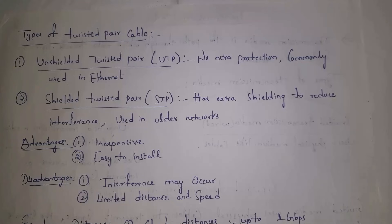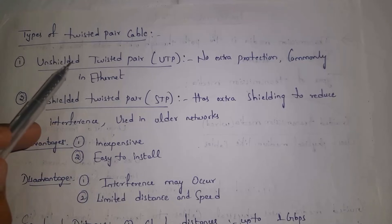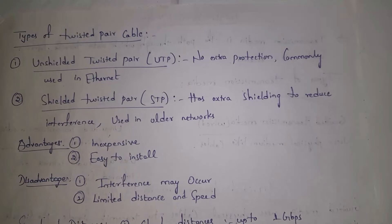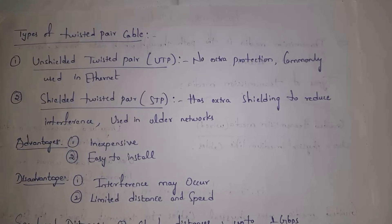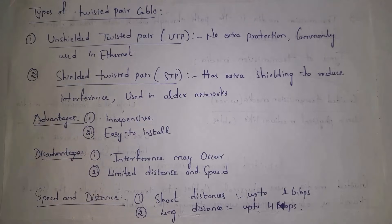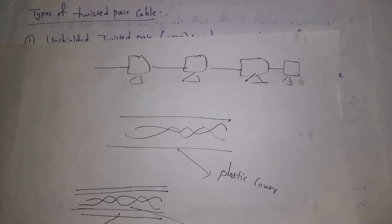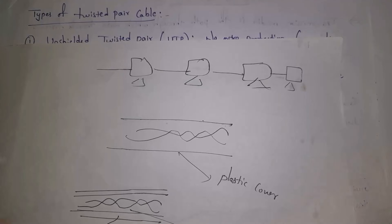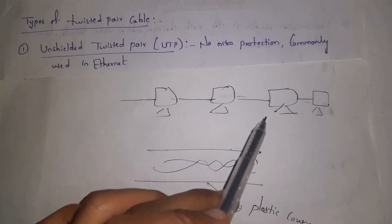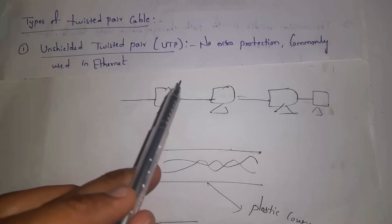Twisted pair cables are classified into two types: unshielded twisted pair, shortly called UTP, and shielded twisted pair, shortly called STP. In unshielded twisted pair there is no extra protection. UTP is commonly used in Ethernet — if we connect all computers on one floor using cables we call it Ethernet — and we use unshielded twisted pair cables for that.